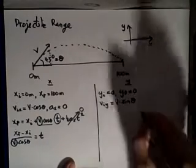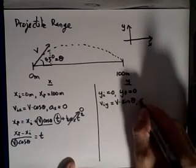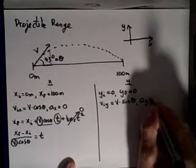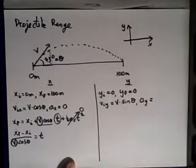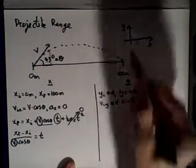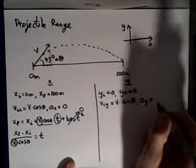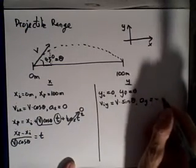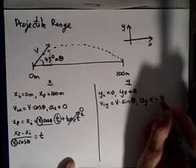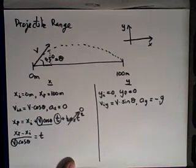Finally, the acceleration in the y direction is something we know in this problem. It's downwards, so it's negative, and the magnitude is the gravitational constant g.